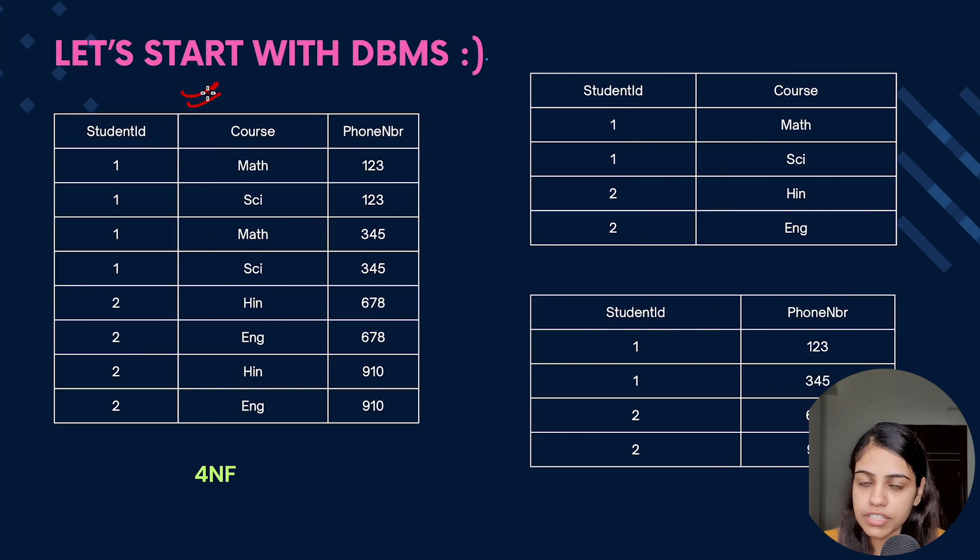So this was our base table or original table. Now it has been split into two tables and the common attribute between them is StudentID. So what we have done is we have split the table into StudentID and Course, and StudentID and PhoneNumber. Now here you can see that StudentID is only having two entries and the course is mentioned for that particular StudentID.